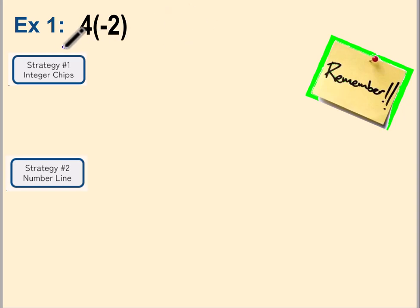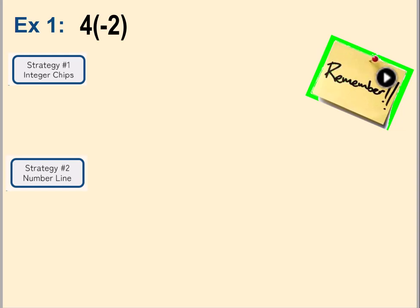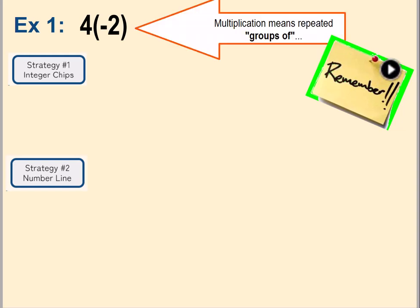Let's go ahead and get started. Example one: as you'll recall, when you have a number outside of the parentheses next to the parentheses without any operational symbol in between, that means multiplication. So this means four times negative two. Going back to when we learned about multiplication in elementary, multiplication means repeated groups, so this would be four groups of negative two.